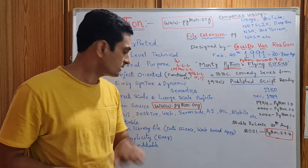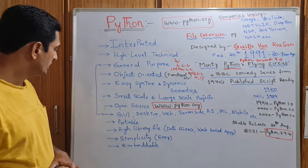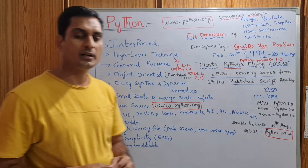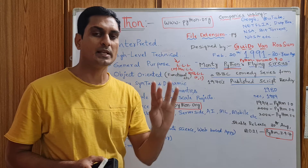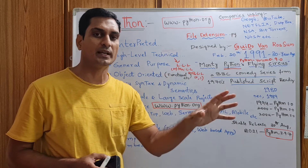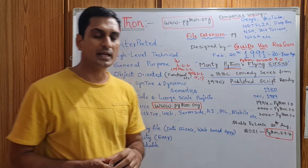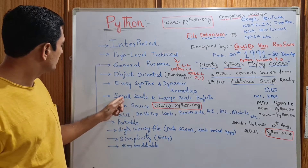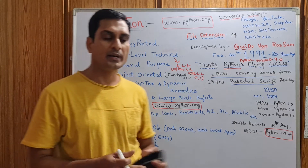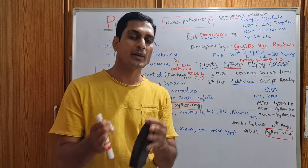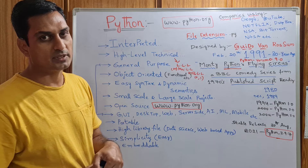Python's high library files allow you to design data science applications as well as web-based applications. Simplicity is one of the best qualities of Python — you can write code much more easily than in C, C++, Java, or .NET. The syntax is easy and the code volume is much less. Embedded means you can combine and integrate other programming languages and databases easily with Python.